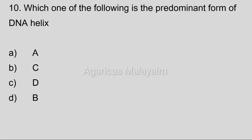Tenth question: Which one of the following is the predominant form of DNA? Answer options: A, C, D, B. Correct answer: Option B.